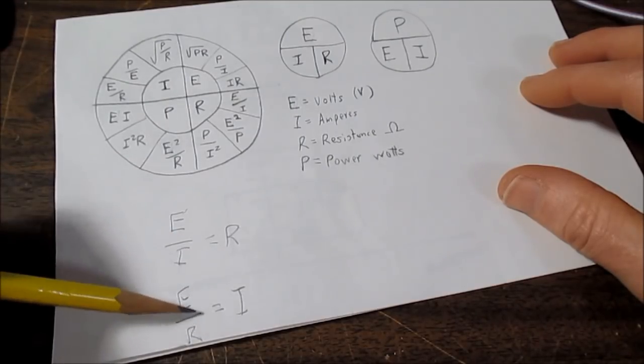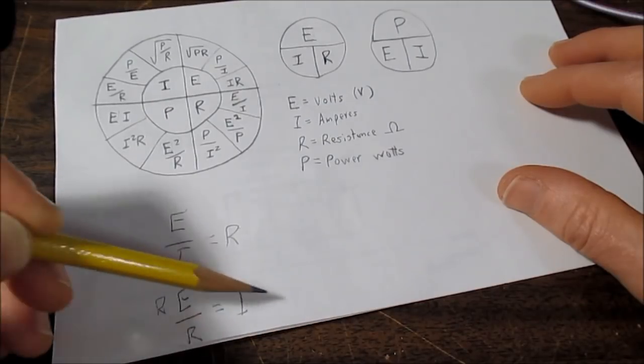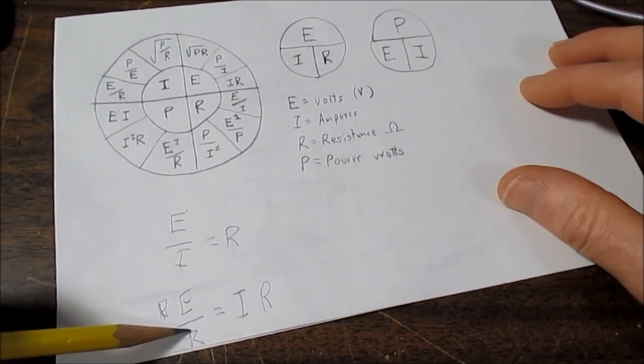And to show how that works, you just multiply R on each side, and these cancel out, so it's I times R equals E.